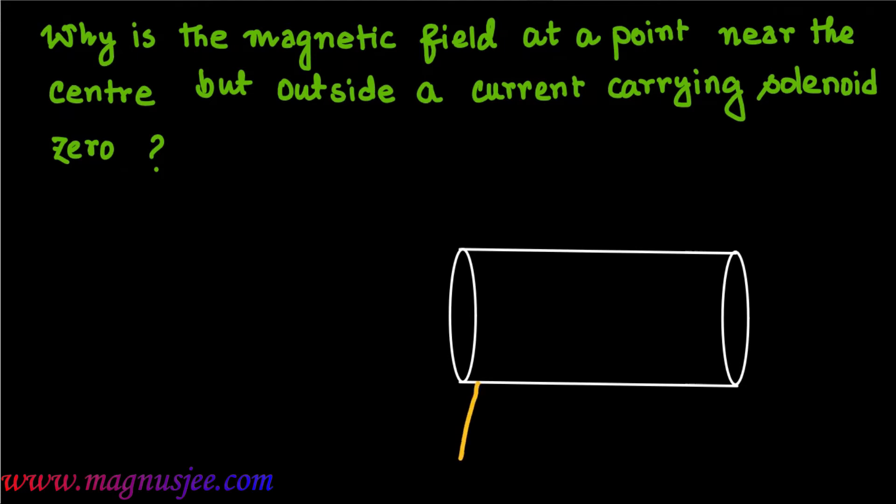Why is the magnetic field at a point near the center but outside a current-carrying solenoid zero?